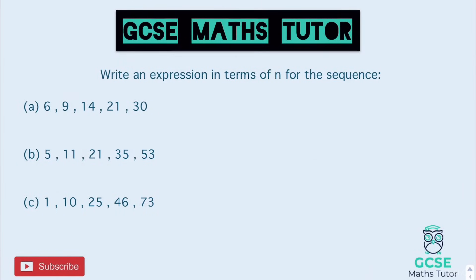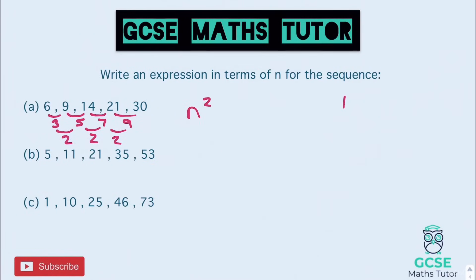Okay, so answers for these. The first one — we have a first difference of 3, 5, 7, 9. So a second difference of 2, which means it's an n squared sequence. Writing down the square numbers: 1, 4, 9, 16. To get from 1 to 6, it's add 5. And from 4 to 9, it's also add 5. So it's n squared plus 5. There's our first one.